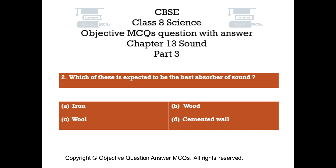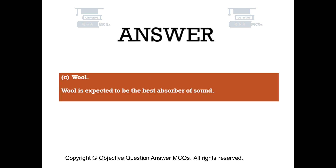Question number 2. Which of these is expected to be the best absorber of sound? Option A – iron. Option B – wood. Option C – wool. Option D – cemented wall. The right answer is option C. Wool is expected to be the best absorber of sound.